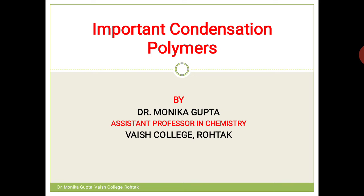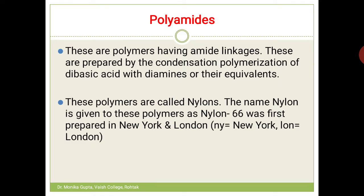Now let's move on to the examples. First of all, I am telling you about polyamides. Polyamides are polymers which have amide linkages — amide linkage meaning C double bond O-NH. These are prepared by condensation polymerization of dibasic acid with diamines and their equivalents to give polyamides.